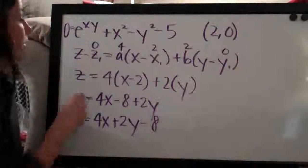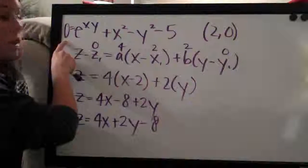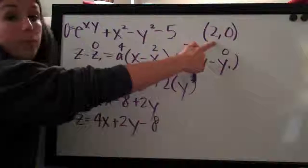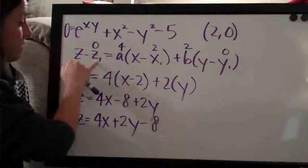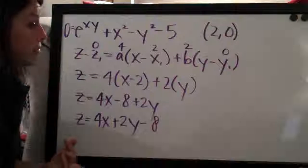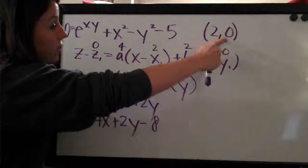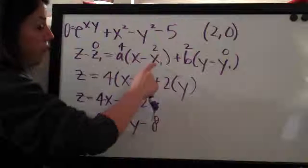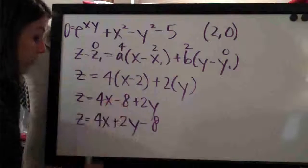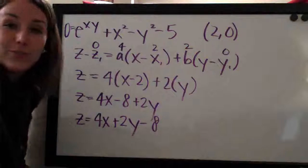So that's linear approximation. Remember: subtract the constant from both sides to set the equation equal to zero. Take partial derivatives with respect to x and y. Plug in the given point to the original function to find z1, to the partial with respect to x to find a, and to the partial with respect to y to find b. Use the given point for x1 and y1, plug everything in, simplify, and solve. The final answer is z equals 4x plus 2y minus 8.